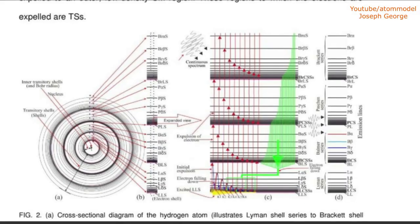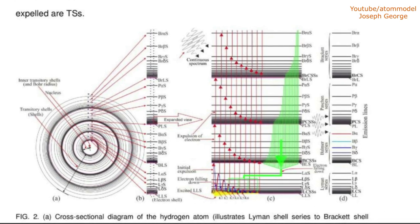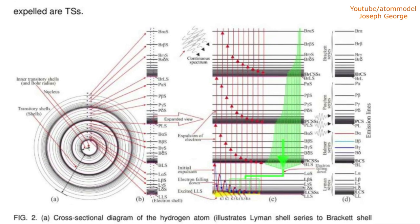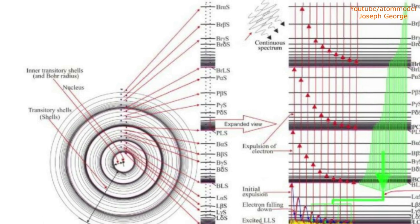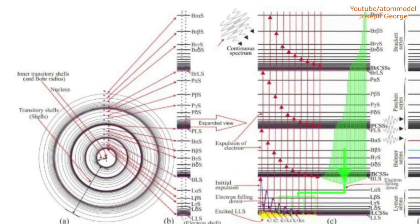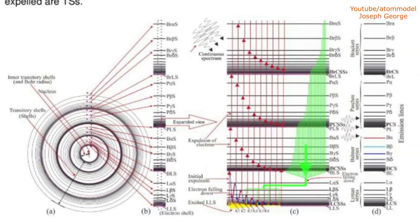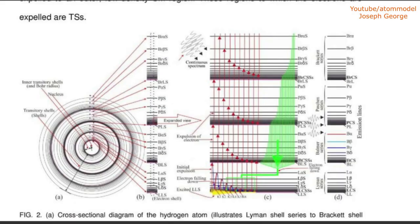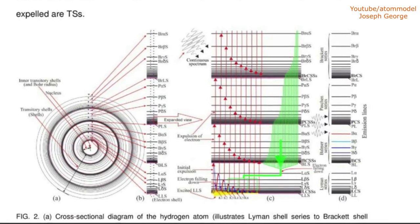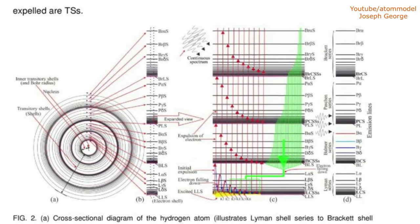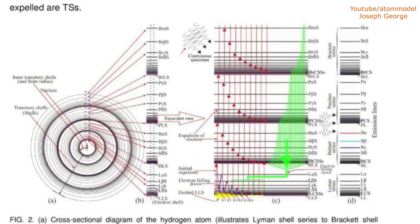then the electron will absorb that photon and vibrate with frequency of the incident photon. This causes the electron to emit a secondary photon with the same frequency of the incident photon at an oblique angle. Now because the density of ether is greater in the inner regions, the electron will be expelled to an outer transitory shell.